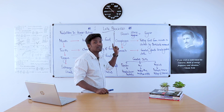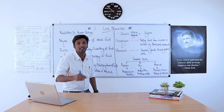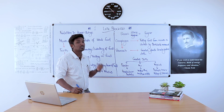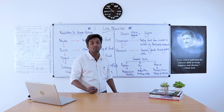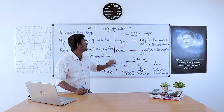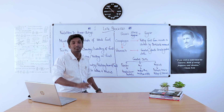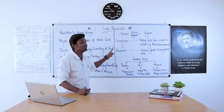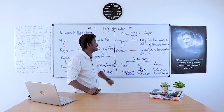The esophagus takes food from the mouth to the stomach by peristaltic movement — a wave-like motion. It is a long tube starting from the mouth to the stomach, and food travels through it by peristalsis.